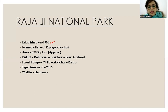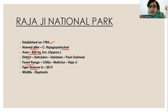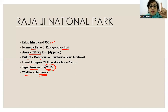Rajaji National Park was established in 1983 and was named after C. Rajagopalachari. The area is 820 square kilometers. The districts are Dehradun, Haridwar, and Pauri Garhwal. It was declared a Tiger Reserve in 2015. Jim Corbett became a tiger reserve in 1973. The dates are very, very important.